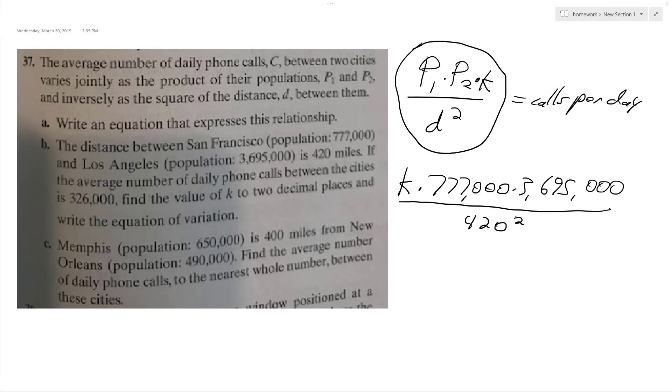Alright, so this is all equal to 326,000. So then we get a k value of approximately 0.02, roughly. It's pretty close to that.